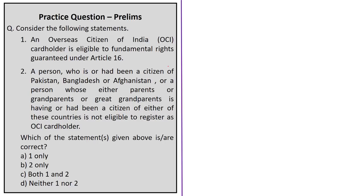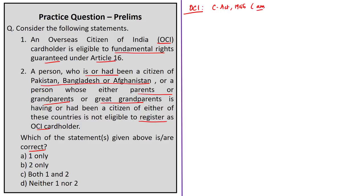Now let us start our practice question session. The first question is based on overseas citizens of India with two statements. Statement 1 says that an OCI cardholder is eligible for fundamental rights guaranteed under Article 16. Statement 2 says that a person who is or had been a citizen of Pakistan, Bangladesh, or Afghanistan, or a person whose parents, grandparents, or great-grandparents is or had been a citizen of any of these countries, is not eligible to register as an OCI cardholder. The OCI scheme was introduced by amending the Citizenship Act of 1955 through the Citizenship Amendment Act of 2005.